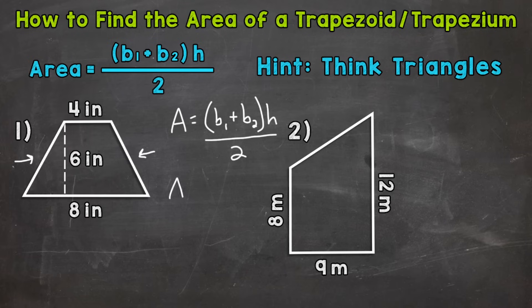So let's plug in. Base one, we're going to use four inches, plus base two, we're going to use eight inches. Remember, the bases are the parallel sides times the height, which is six inches, divided by two. So we have four plus eight, which is 12, times six is 72. So we have 72 over two or 72 divided by two.